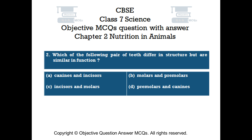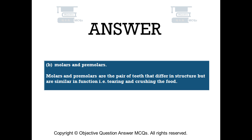The right answer is Option B: Molars and premolars. Molars and premolars are the pair of teeth that differ in structure but are similar in function, i.e., tearing and crushing the food.